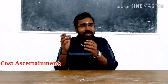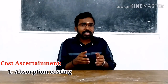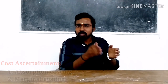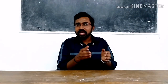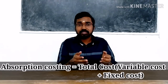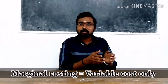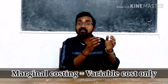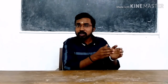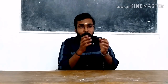The cost can be ascertained with the help of mainly two techniques. Number one is absorption costing, and number two is marginal costing. In the case of absorption costing, we are considering total cost for the ascertainment of cost — that means we are considering both fixed cost and variable cost. But in the case of marginal costing, we are considering only variable cost, distinguishing between fixed cost and variable cost. That is the peculiarity of marginal costing.